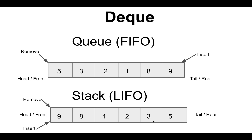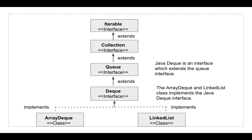You will get more clarity when we write the Java code. Deque is an interface, and ArrayDeque and LinkedList implement the behavior of the Deque interface. Deque is a queue, so it extends the Queue interface, meaning we can use all queue methods when working with Deque. Queue extends Collection, so it's a collection, and Collection extends Iterable, which means we can iterate over the collection.